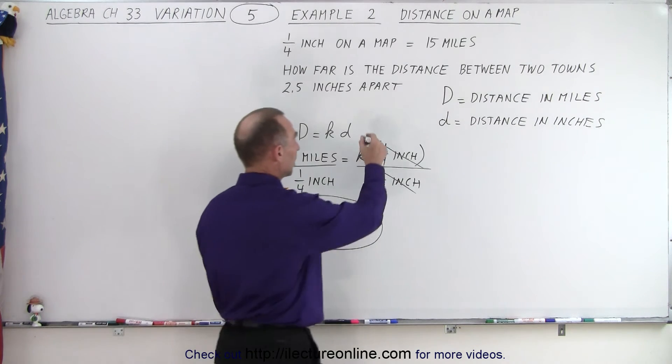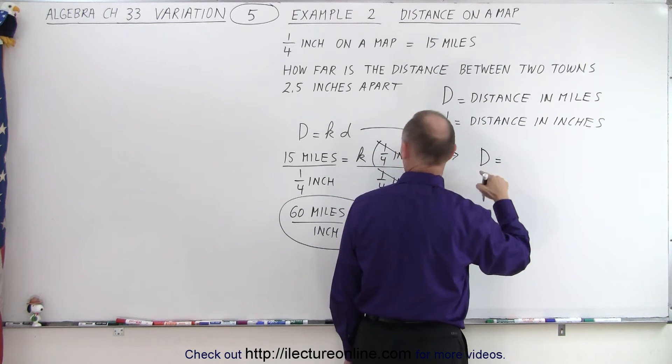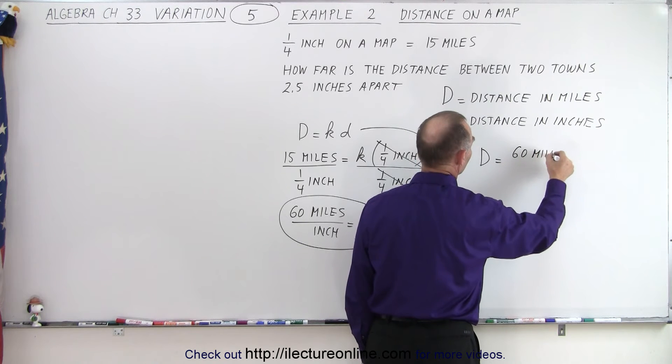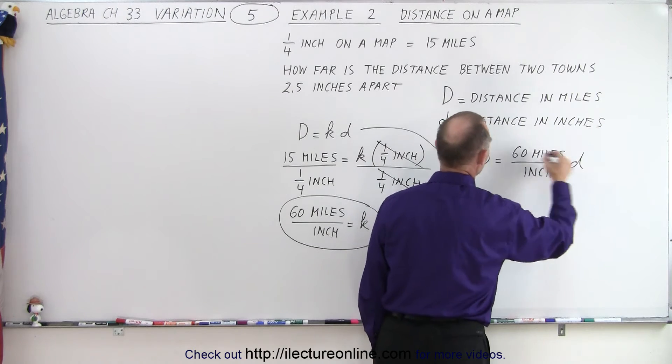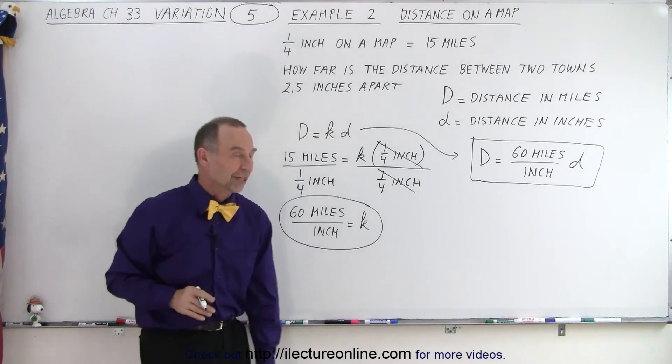So now we have the value for the constant of variation. Now we can plug that back in the equation. The distance between towns is equal to k, now k is 60 miles per inch, times little d.